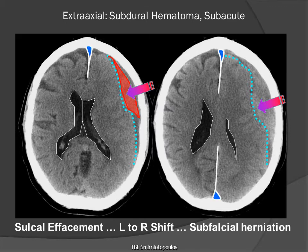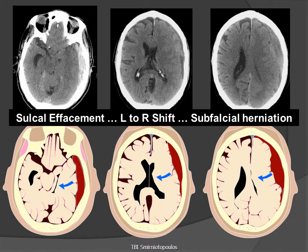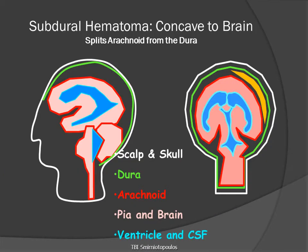When we have subfalcial herniation, the anterior portion of the lateral ventricle and the posterior portion of the lateral ventricle must move medially to pass through the central opening in the falx cerebri. Looking diagrammatically at three sections from the same patient, we can see how: number one, the sulci are effaced; number two, there is a nearly isoattenuating extra-axial collection, except in the lowest section in the middle cranial fossa; and three, there is midline subfalcial herniation.